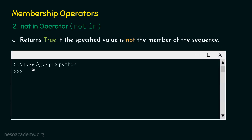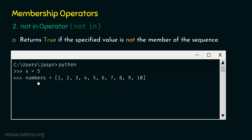Let's open the command prompt and activate the Python interactive shell. Type: x = 5. Then hit enter and type: numbers = [1, 2, 3, 4, 5, 6, 7, 8, 9, 10]. The numbers variable is pointing to this list. Now type: x not in numbers. Is it true that x is not a member of numbers? x is 5 and 5 is a member of this list. Therefore, if we hit enter, we will get false as a result, because x is a member of numbers.